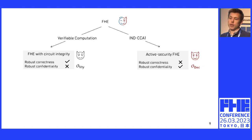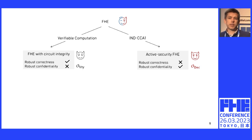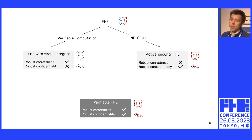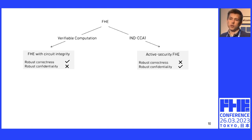On the other hand, some people have been trying to build CCA1-secure FHE — FHE that's secure against non-adaptive chosen ciphertext attacks — using techniques from traditional cryptography. There, the goal is to give confidentiality against the fully-malicious adversary with access to a decryption oracle, but there's no notion of correctness, so you don't know what you're getting back from the server. We weren't happy about this state of affairs, and so we tried to work towards a verifiable FHE that achieves both correctness and confidentiality against this strong malicious adversary setting with access to a decryption oracle.